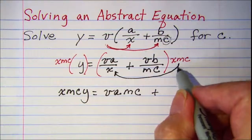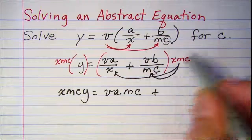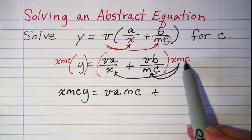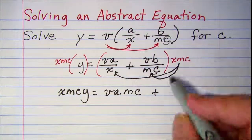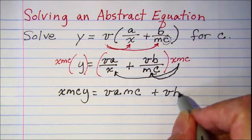When I distribute xmc to this term, the m and c both cancel, and I have vbx.